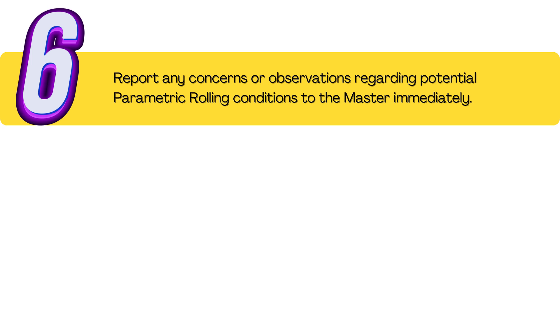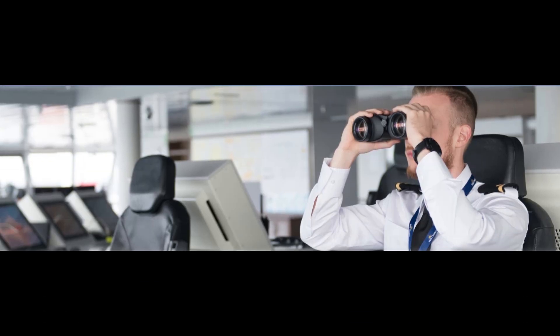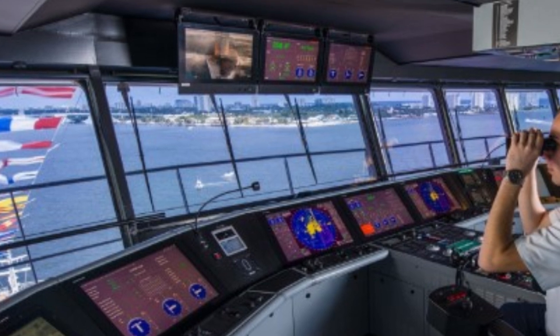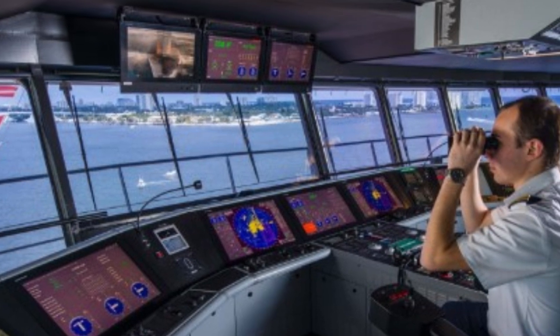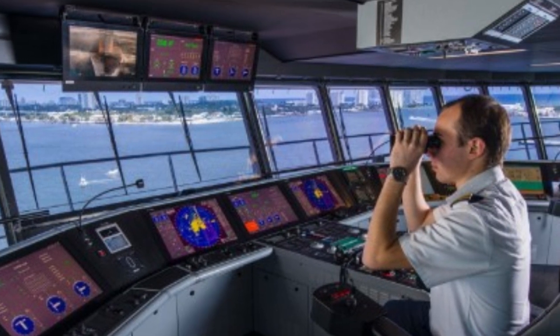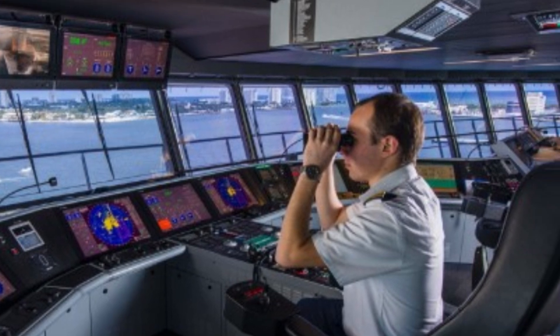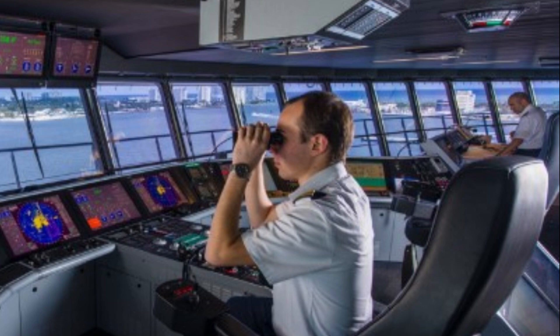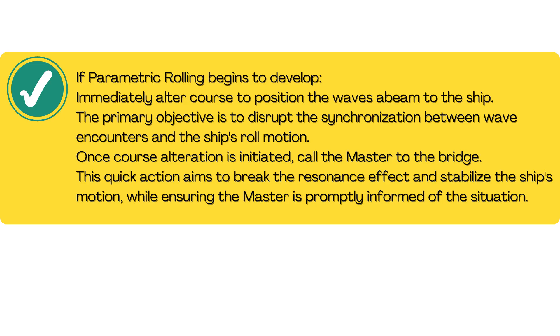Six, report any concerns or observations regarding potential parametric rolling conditions to the master immediately. The vigilance of the officer of the watch in monitoring these factors serves as a critical early warning system for potential parametric rolling situations. By carefully observing and analyzing the relationship between the ship's motions and the surrounding wave conditions, the officer of the watch plays a pivotal role in preventing the onset of parametric rolling events.